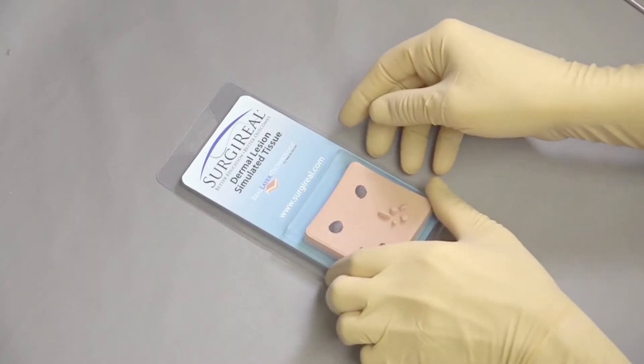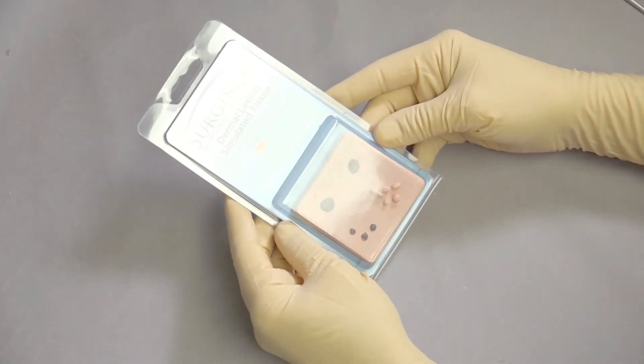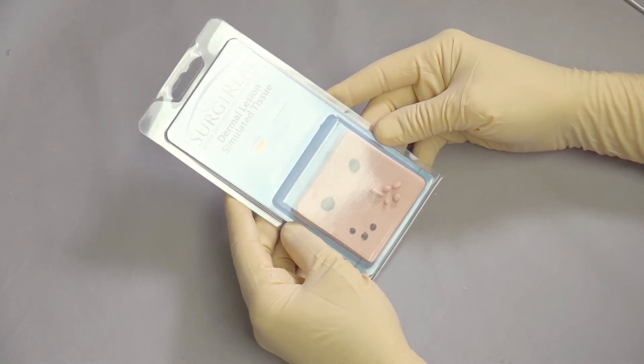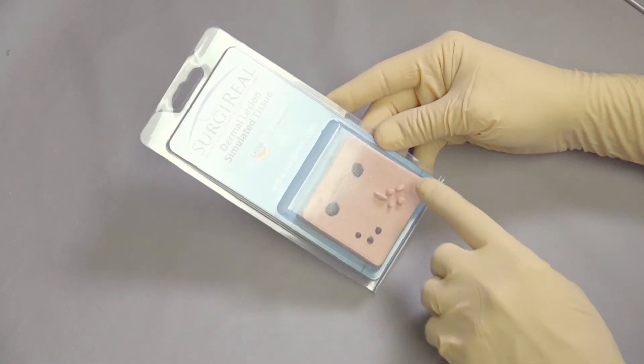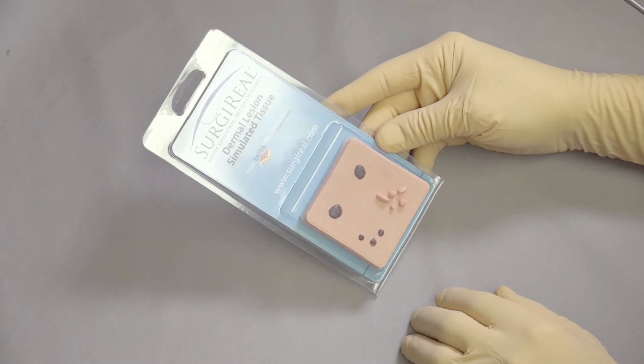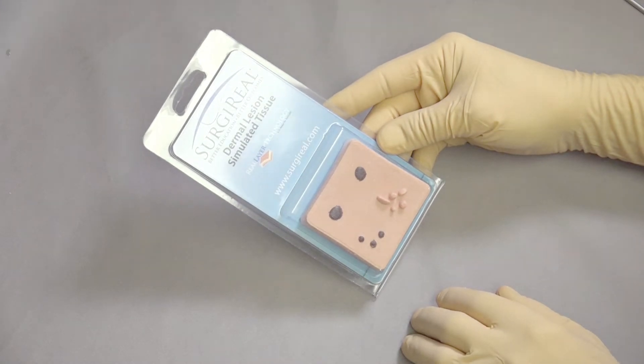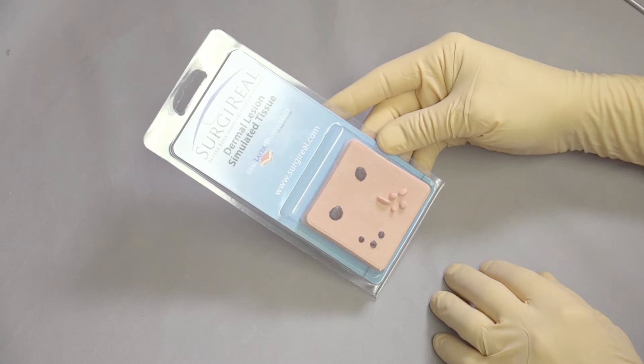The Surgery Real Dermal Lesion Simulated Tissue is designed to replicate a number of different dermal lesions, including some skin tags and moles, and in this case they are designed to be used for biopsies and excisional biopsies.